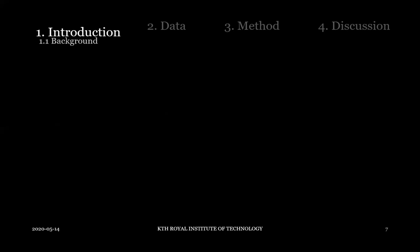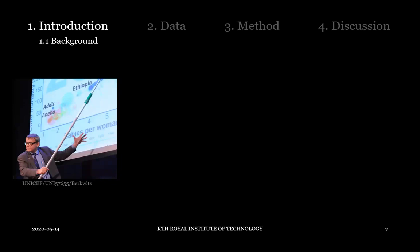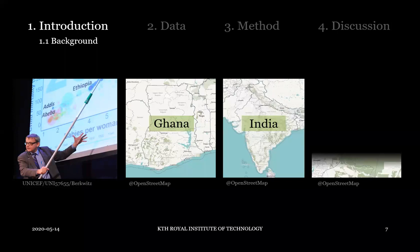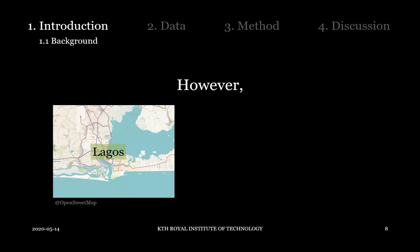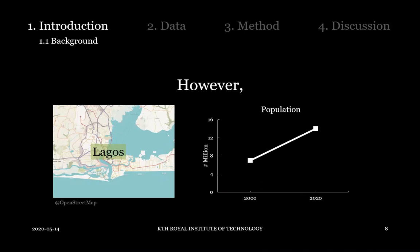Whatever you might hear in the media, the world is getting better. Countries like Ghana, India, and Colombia are emerging economies growing faster than ever before, and we're seeing a sprawling rate of economic growth in low and middle income countries, which is wonderful. But it doesn't come easy — it has growing pains. A city like Lagos in Nigeria saw a huge population boom, going from 7 million to 14 million people in just 20 years, a doubling of an already large city.